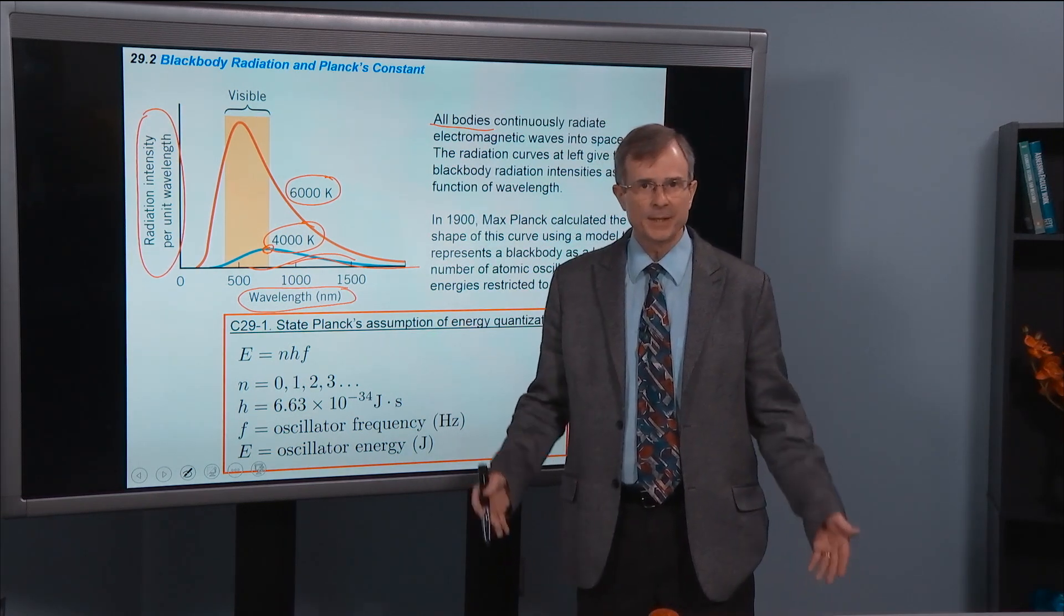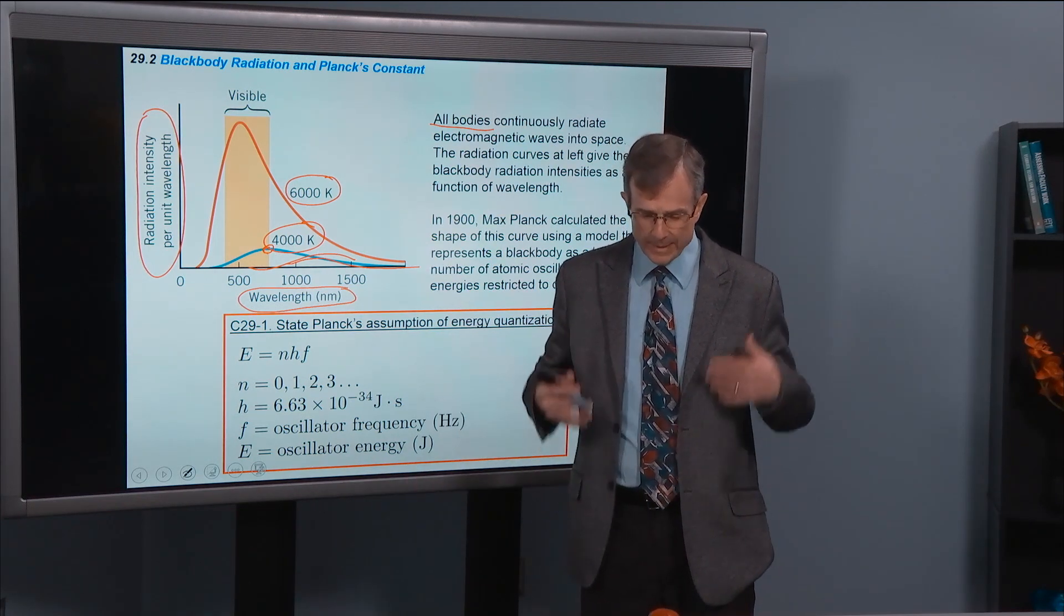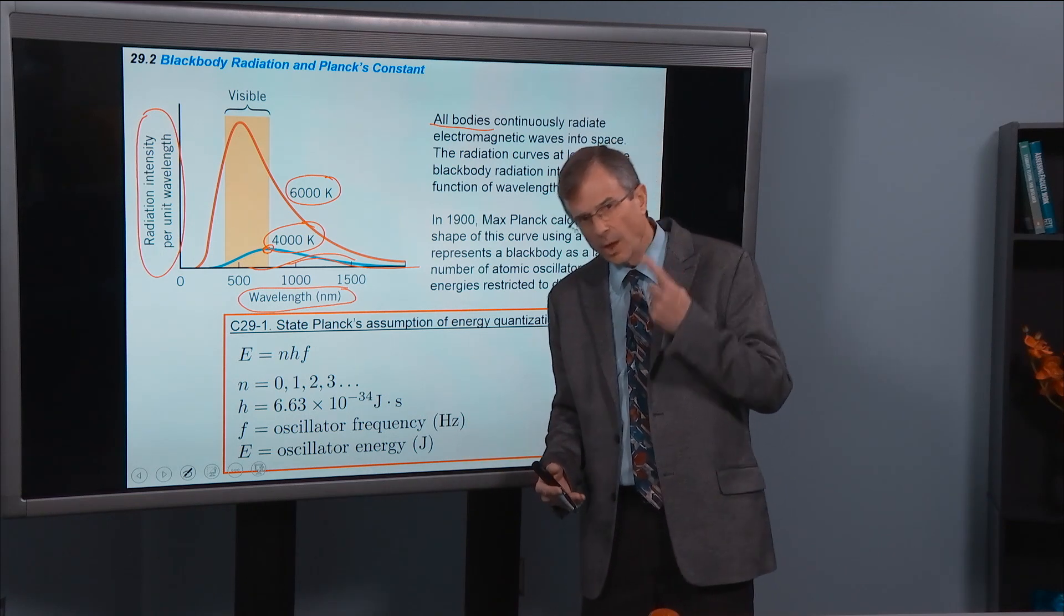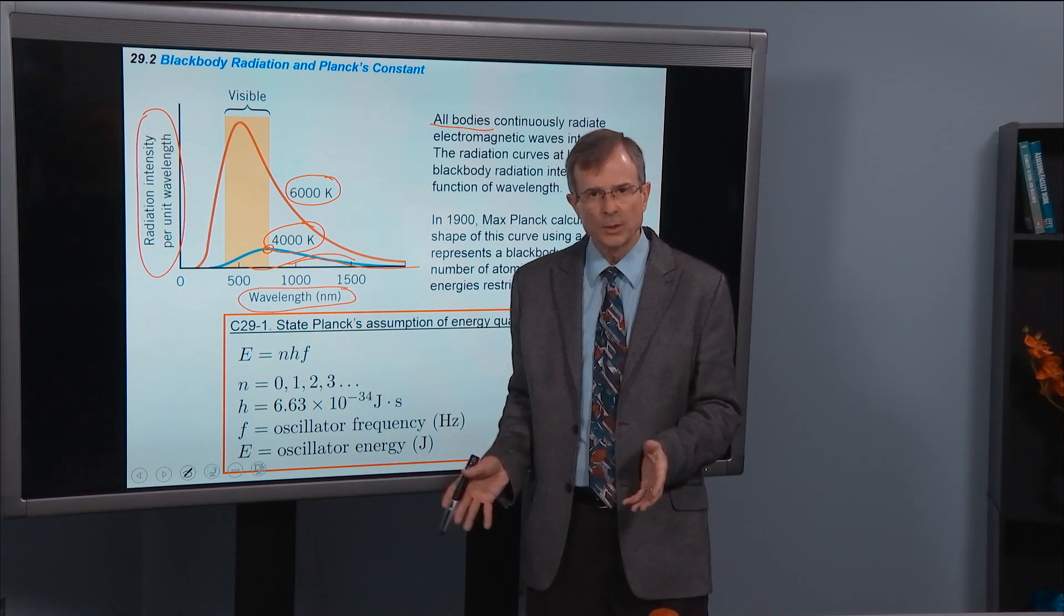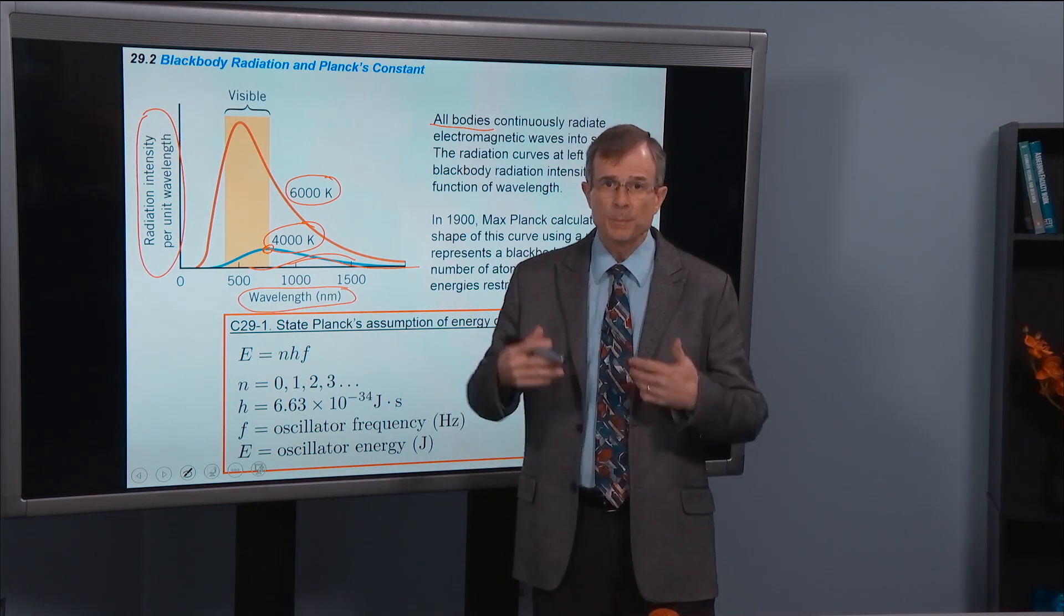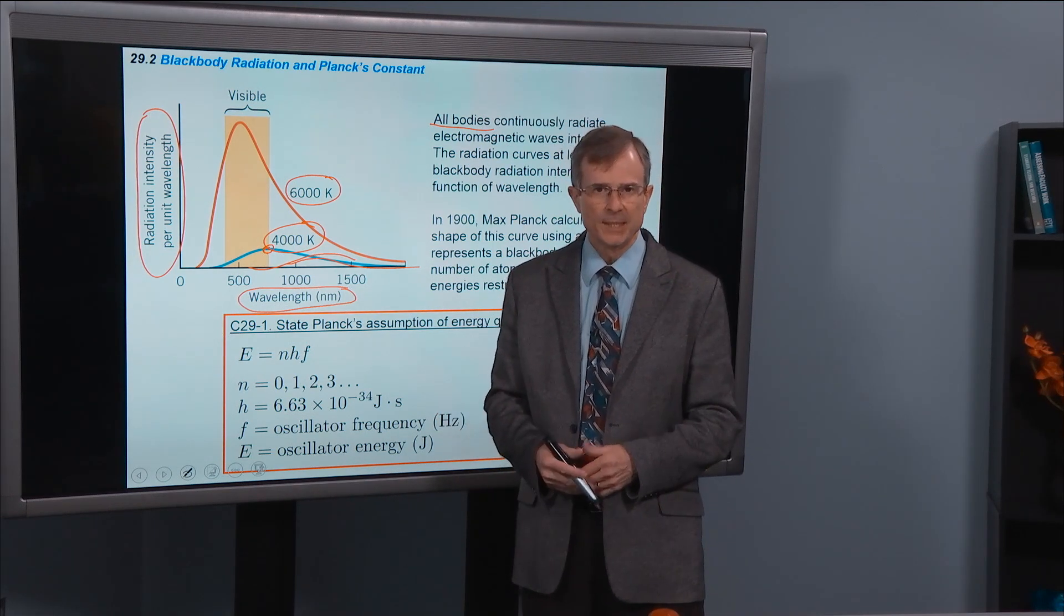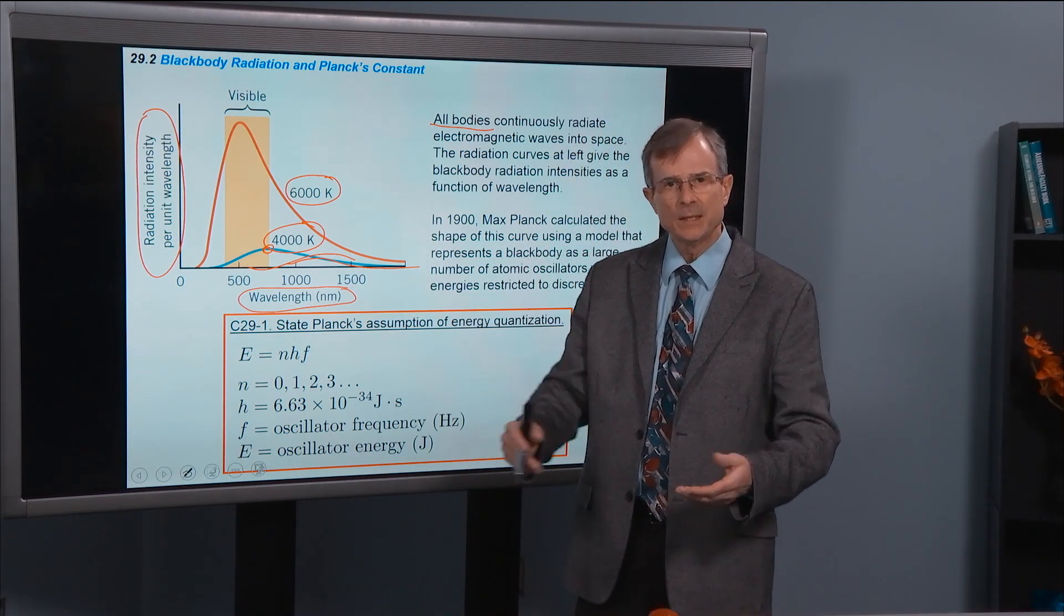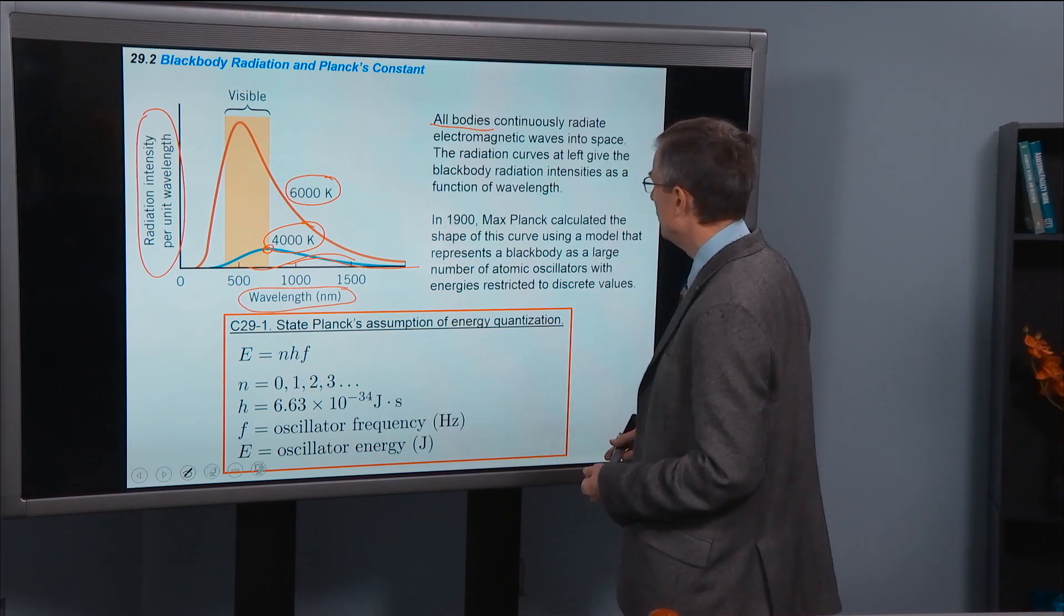So your body is at 98.6 degrees Fahrenheit, whatever that works out to be in Kelvin. There's a black body spectrum that's emitted by your body. And in fact, you already know this because if you get yourself into an enclosed space, you'll heat up that space by the radiation provided by your body, which is primarily in the infrared range. So your body's producing heat, and that is your black body radiation produced by your body.